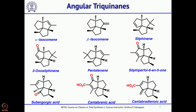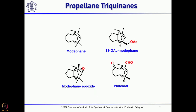There are many angular triquinines — alpha-isocomane, beta-isocomane, silphinene, and others — and we will try to cover total syntheses of some of them. Each group has used different key reactions to make these natural products. Coming to the third category, propellane-type triquinines: the basic diquinine core is almost the same, with only the third ring being different. Some of them are oxygenated, for example isomodifane epoxide and polycarol, while the basic one, modifane, has only a double bond.